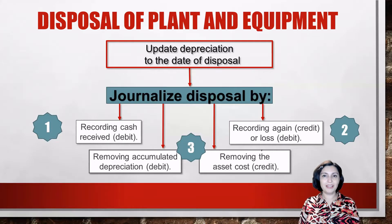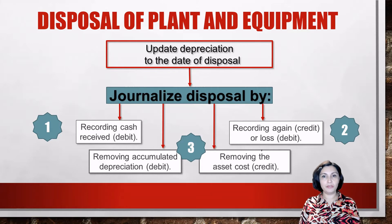When a plant asset is disposed of, the first thing we need to do is to update depreciation to the date of disposal. After completing the update, the journal entry can be created. The journal entry begins by recording a debit to the cash account if cash was received, or a credit to the cash account if cash was paid by the company. Remember that cash is an asset account and is increased by debit and decreased by credit.